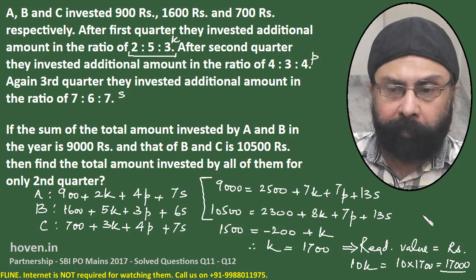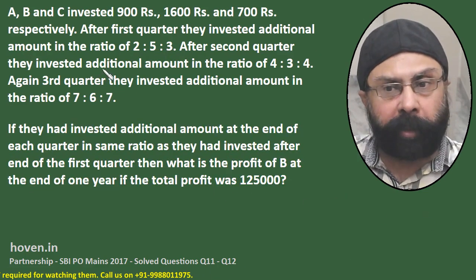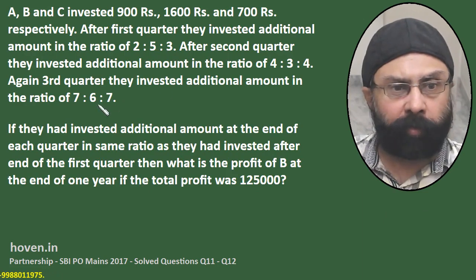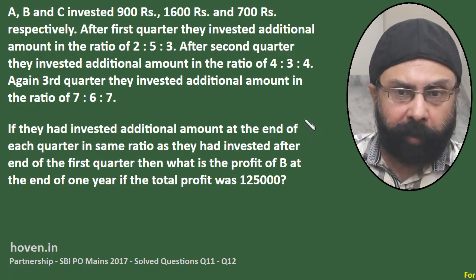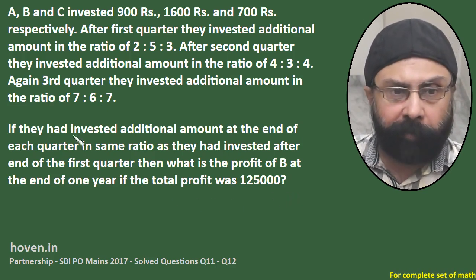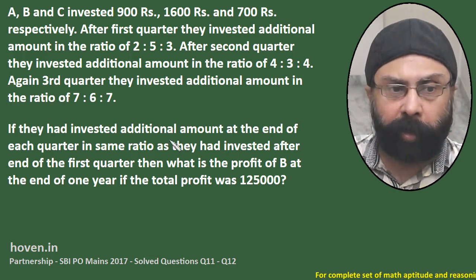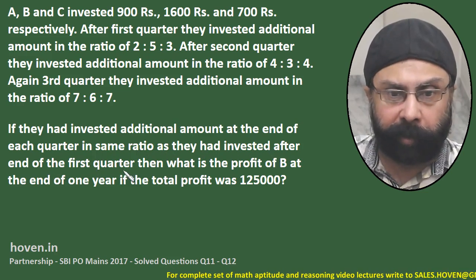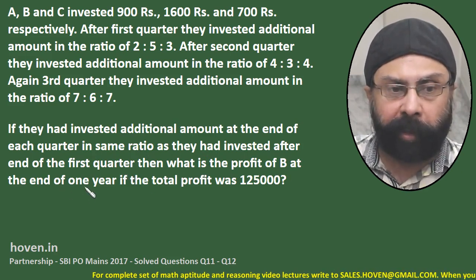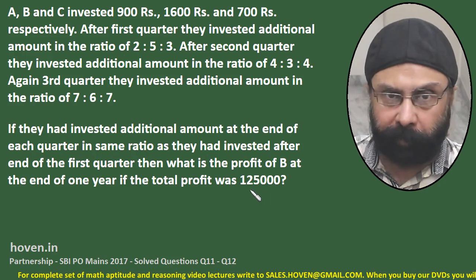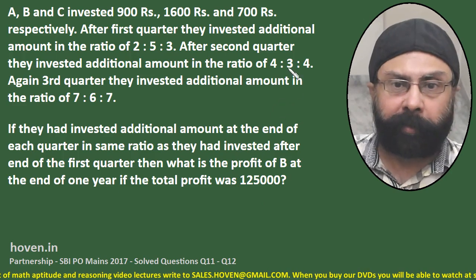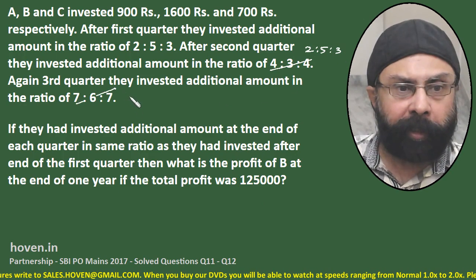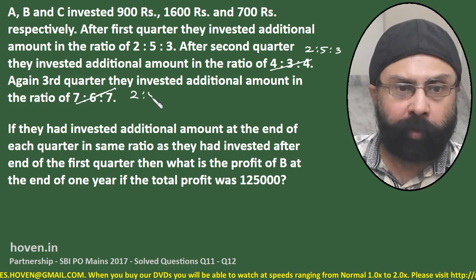Let us move to the next question, which is based on the same data. A, B and C invested the same initial amounts; after first, second and third quarter they invested additional amounts. The difference in this question is: if they had invested the additional amount at the end of each quarter in the same ratio as after the first quarter — that is, 2:5:3 — then what is the profit of B at the end of one year if the total profit was 5250?